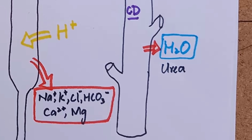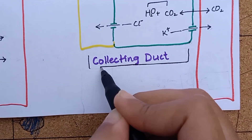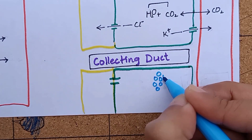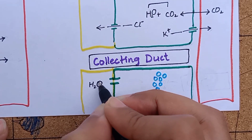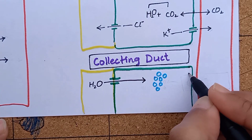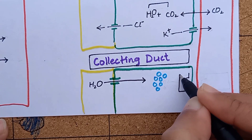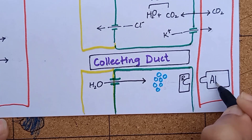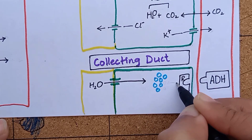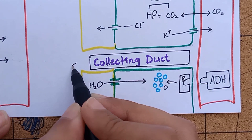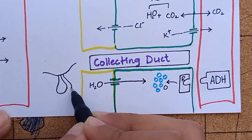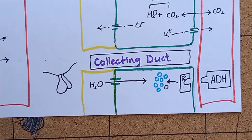In the medullary collecting duct, there is final reabsorption of water and urea according to the body's requirements. The epithelial cells have specialized channels called aquaporins that reabsorb water. Water permeability here is controlled by ADH — anti-diuretic hormone, also called vasopressin — which binds to receptors on aquaporins to increase water permeability. ADH is secreted from the posterior pituitary gland in response to low plasma volume or high plasma osmolarity, and plays an important role in maintaining blood pressure.